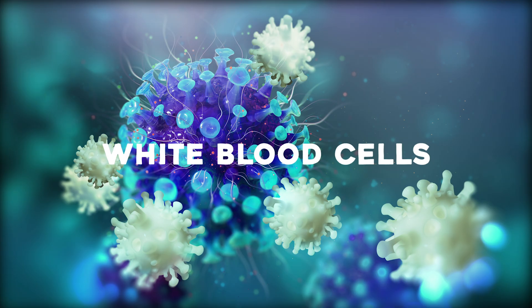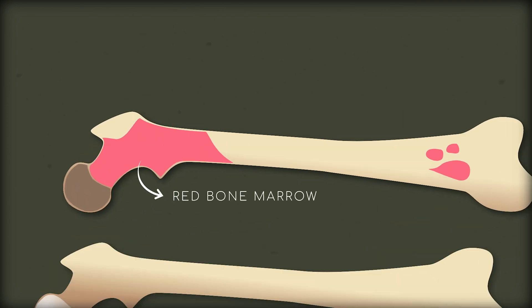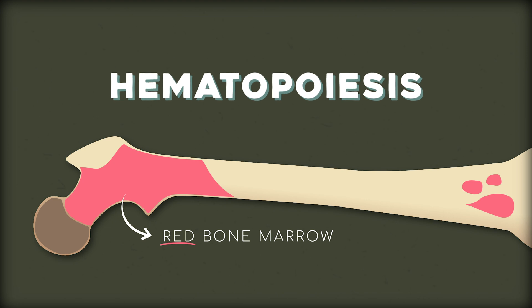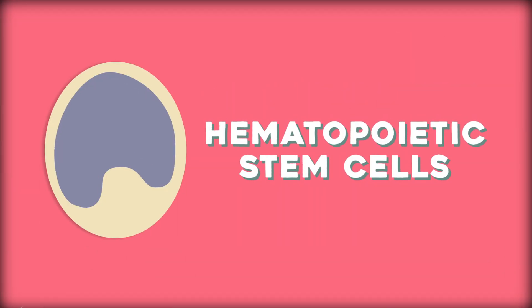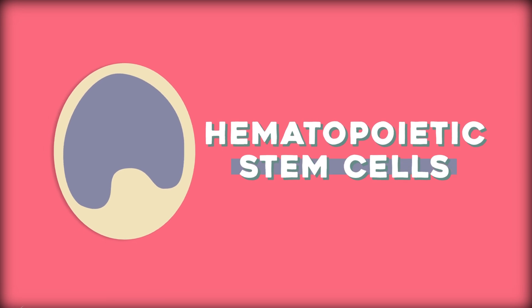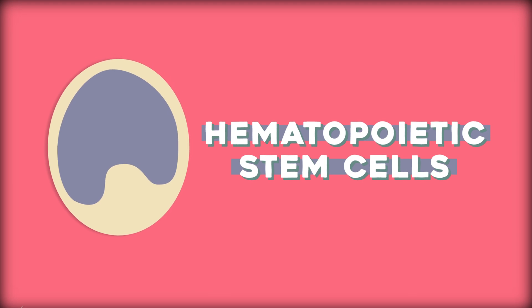Osteocalcin is just one of the things that bone can pump into the bloodstream. Red blood cells, white blood cells, platelets — all kinds of cells start in the bone marrow in a process called hematopoiesis, specifically in the red marrow between the spongy bone. It has a bunch of hematopoietic stem cells, or HSCs. Stem cells are cells that can become other types of cells; hematopoietic means it's going to turn into a blood cell. At any given time, you have HSCs in your bloodstream too, but they started in bone marrow.